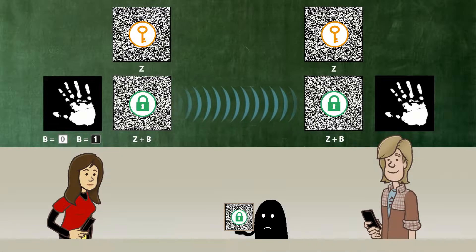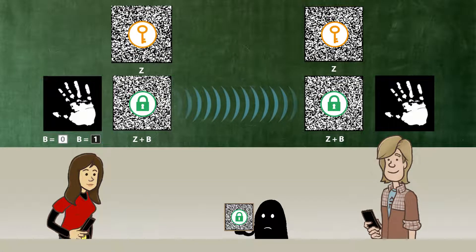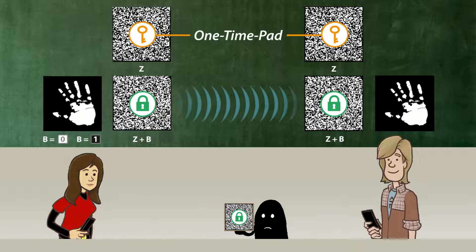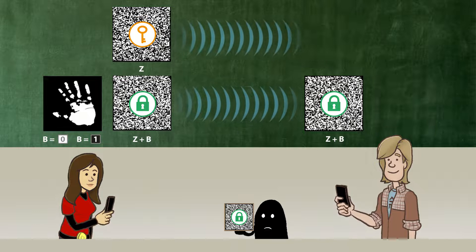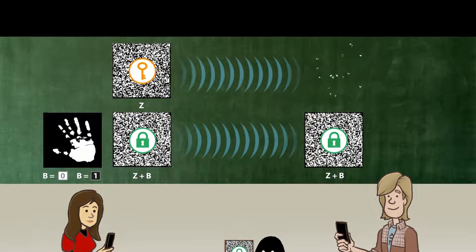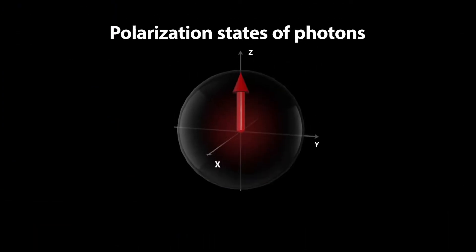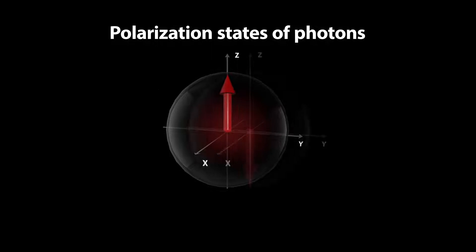In order to achieve data transmission that is absolutely safe from eavesdropping, we need a secret random pattern — the so-called one-time pad that only Alice and Bob know. Here we show how we can transmit the one-time pad using polarized photons.